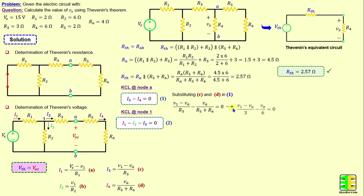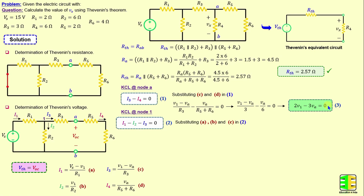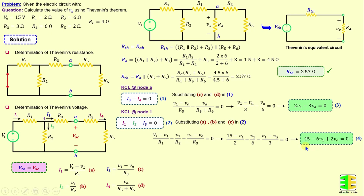Replacing the resistors with their numerical values and simplifying yields: 2·V1 − 3·VA = 0. Then substituting expressions A, B, and C into equation 2 gives (Vs − V1)/R1 − V1/R2 − (V1 − VA)/R3 = 0. Substituting all numerical values and simplifying gives: 45 − 6·V1 + 2·VA = 0.